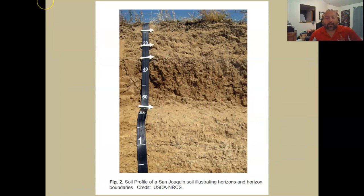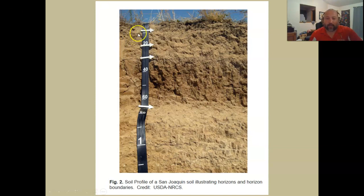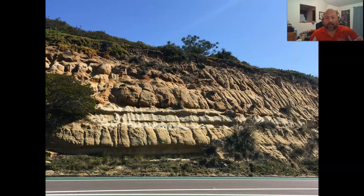Here's a basic look at a soil profile — specifically the San Joaquin soil. The soil's name is San Joaquin. You can see some of the different horizons, where these arrows point to the different layers. A horizon is just a different layer.